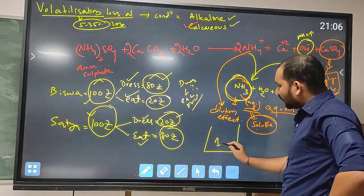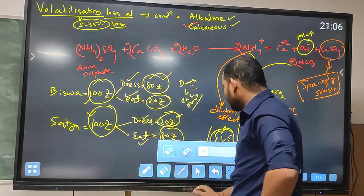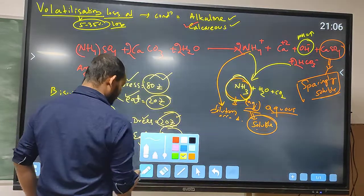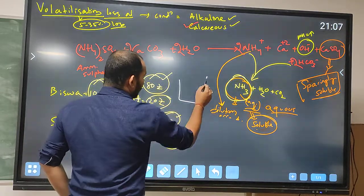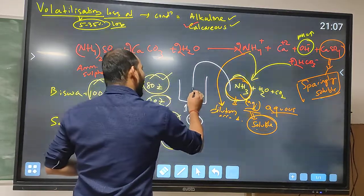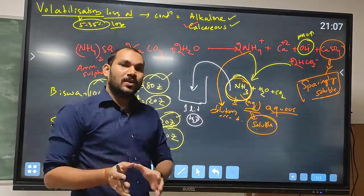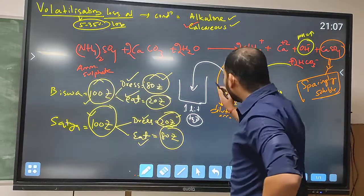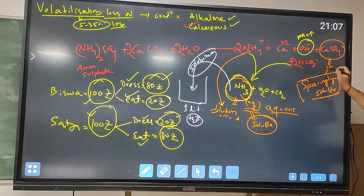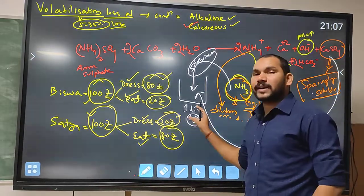Likewise, imagine one liter of water. Ammonia (NH3) wants to dissolve in this water, and so does calcium sulfate. The amount of water is fixed at one liter. NH4 plus is the dilution form — it is more soluble. But calcium sulfate is sparingly soluble, so its concentration in solution will be less compared to the ammonia form.